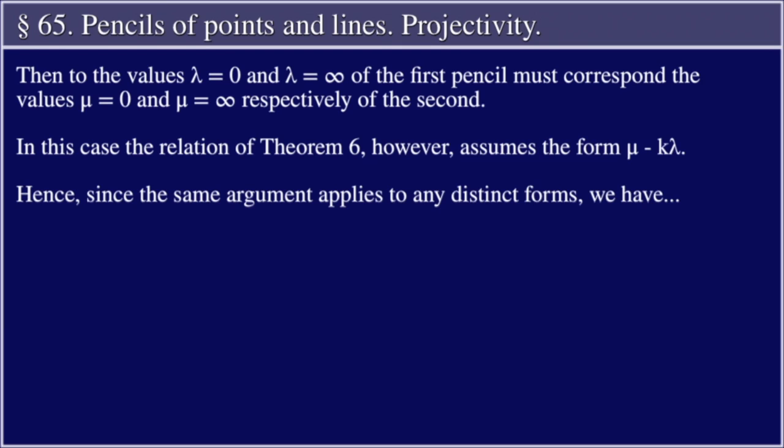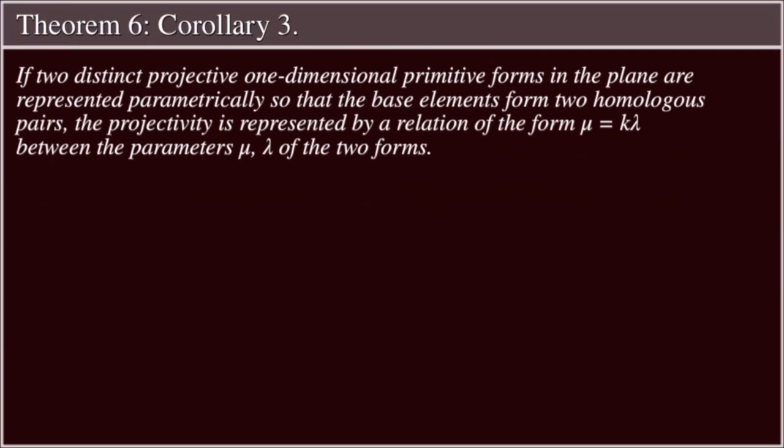Hence, since the same argument applies to any distinct forms, we have Corollary 3: If two distinct projective one-dimensional primitive forms in the plane are represented parametrically so that the base elements form two homologous pairs, the projectivity is represented by a relation of the form μ = kλ between the parameters μ, λ of the two forms.